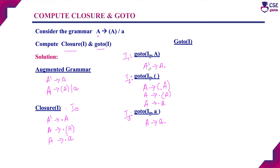Next we need to perform goto operation for state I1. If you check here, A' derives A dot — there is no further move. So state I1 goto operation is complete.